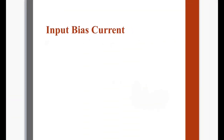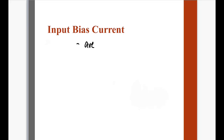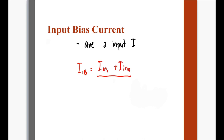Punta tayo sa second property, which is input bias current. When we say input bias current, it is the average of the two input currents. Therefore, our equation will become: input bias current is equal to input current 1 plus input current 2, divided by 2 — since average lang naman yun at dalawa lang sila, just add them and divide by 2. The unit should be amperes, but usually microamperes yan since maliit lang yung current natin sa op-amp.